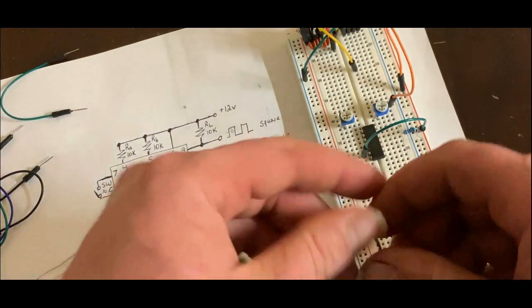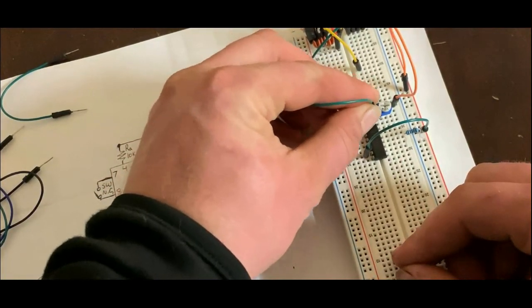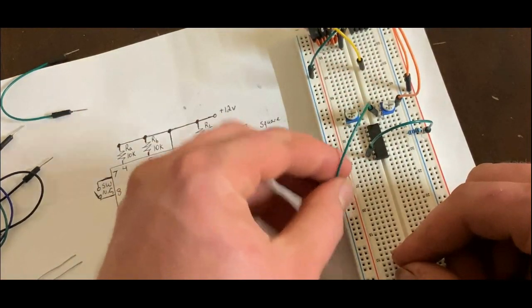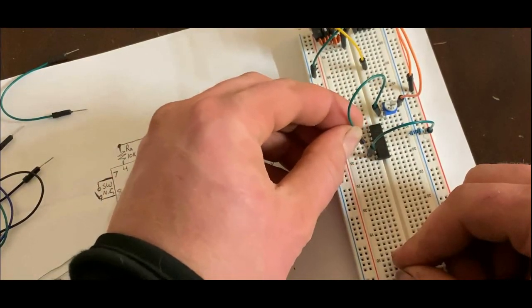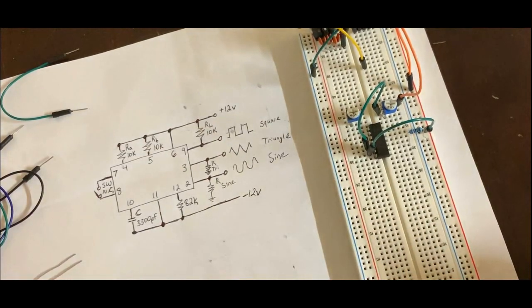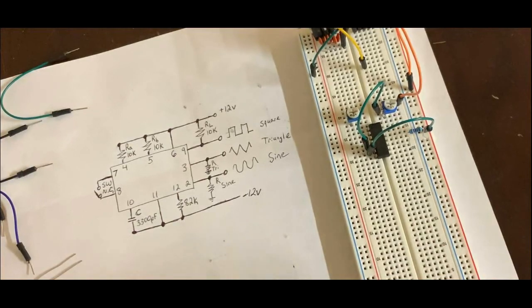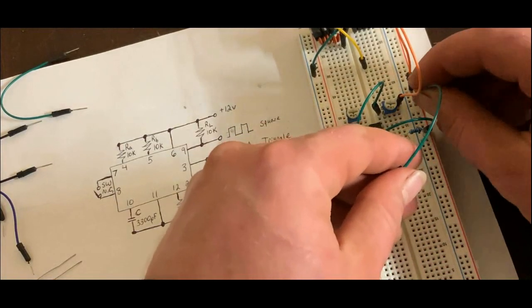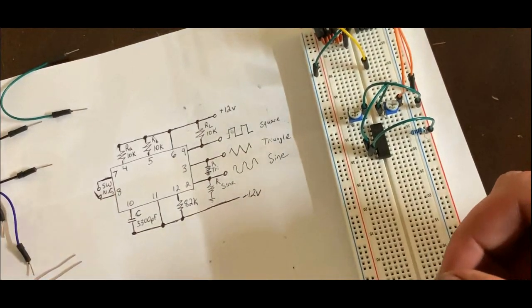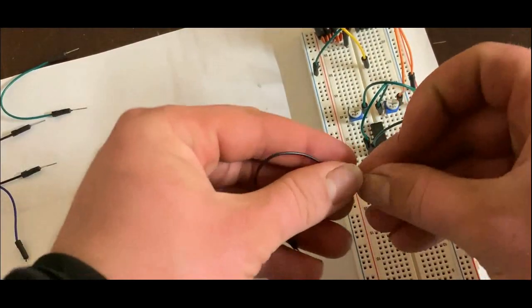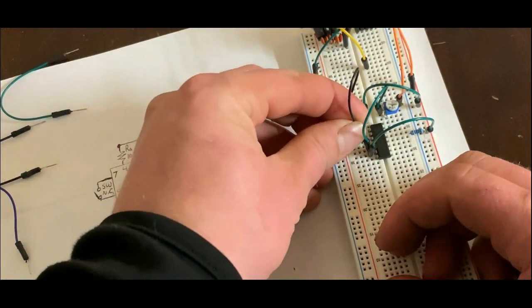This is just how I'm doing it. And then, the middle pin to pin 5. And then, the exact same thing for pin 4. Straight from positive 12 volts to the top pin. And then, from the middle pin to pin 4.